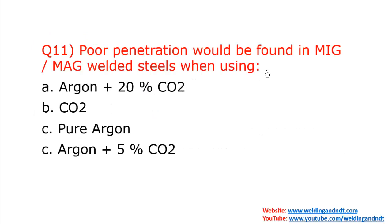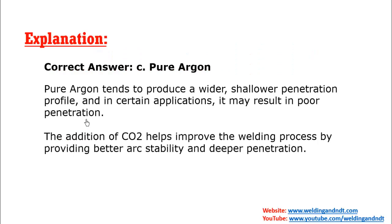Question number eleven: poor penetration would be found in MIG or MAG welded steels when using? With pure argon, penetration will not be very deep — it will be wider and shallower. So option C is the correct answer: pure argon tends to produce wider, shallower penetration. If deep penetration is required, CO2 must be added along with the argon.